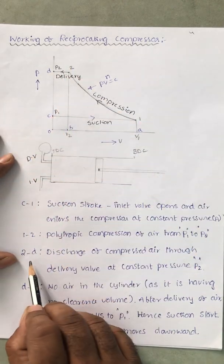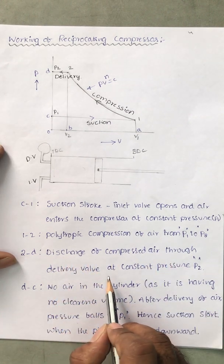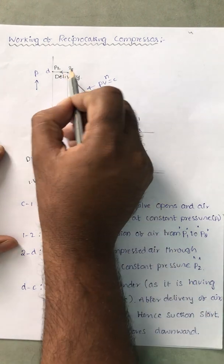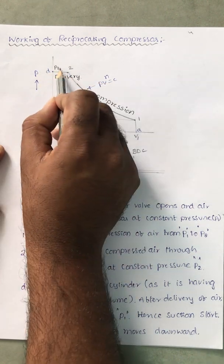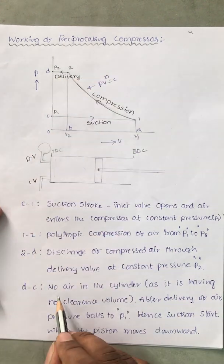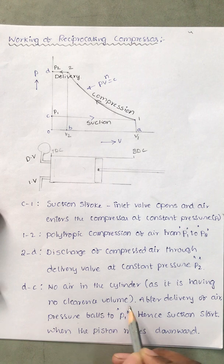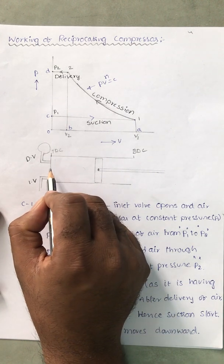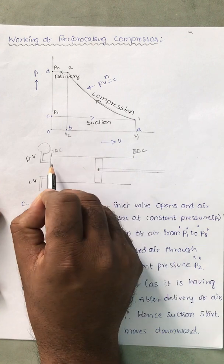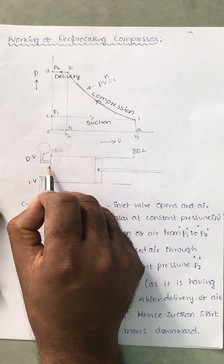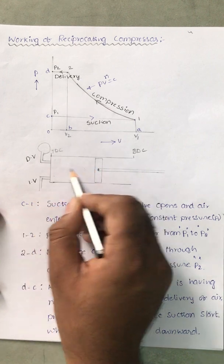Then, 2 to D is the discharge of compressed air through the delivery valve at constant pressure P2. The air is discharged to the container at constant pressure P2. Next, D to C — there is no air in the cylinder as there is no clearance volume. Here we are not taking any clearance volume. When the piston reaches the top dead center, if any volume is present between the piston top side and the cylinder head, that is called clearance volume, but we are not providing any clearance volume here.